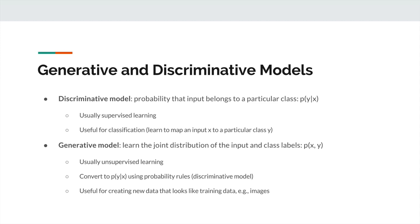Once you produce that distribution, you can say: what is the class label that this input pattern is most likely to be? So that's pretty much what discriminative models are — they're usually used for supervised learning, in particular for classification. You learn a model that can map an input to a particular class, computing a probability distribution using softmax and then taking the maximum likelihood.